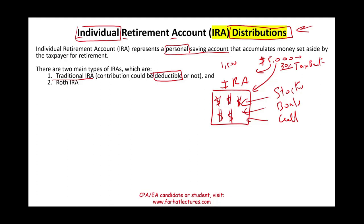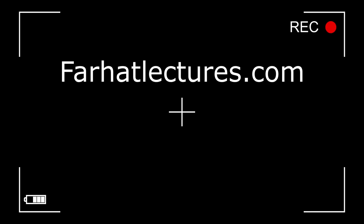You get a tax break now and you can withdraw it later. That money is earning interest, dividends, capital appreciation, and so on. The contribution to a traditional IRA may be deductible, or it may not be deductible — meaning you don't get a tax break.